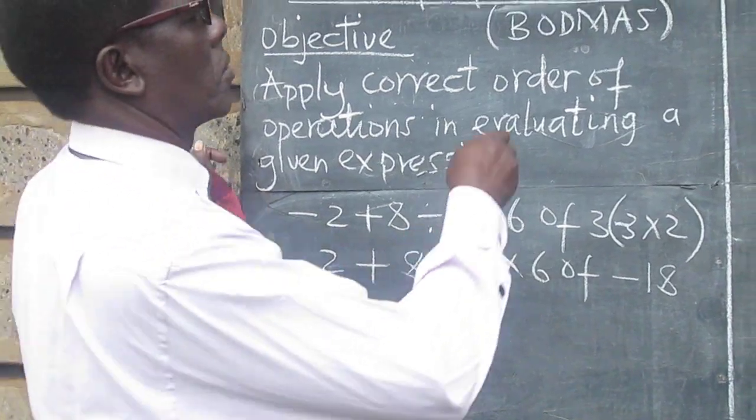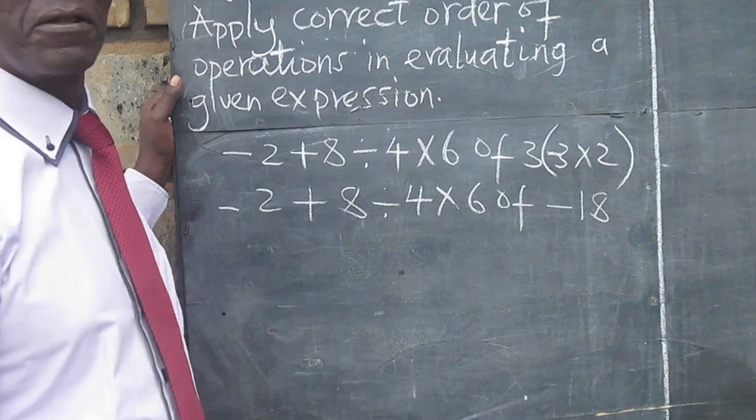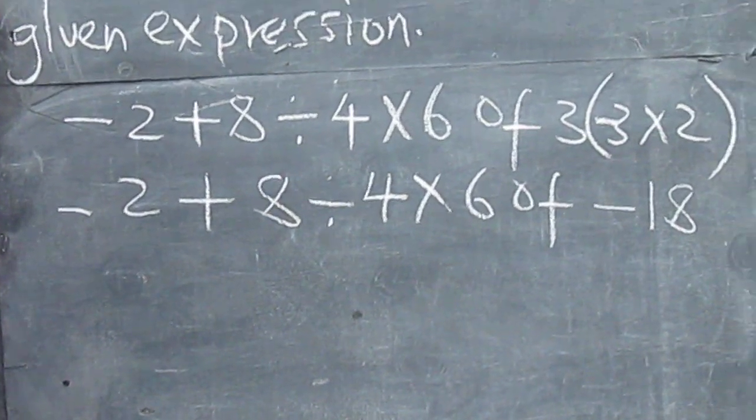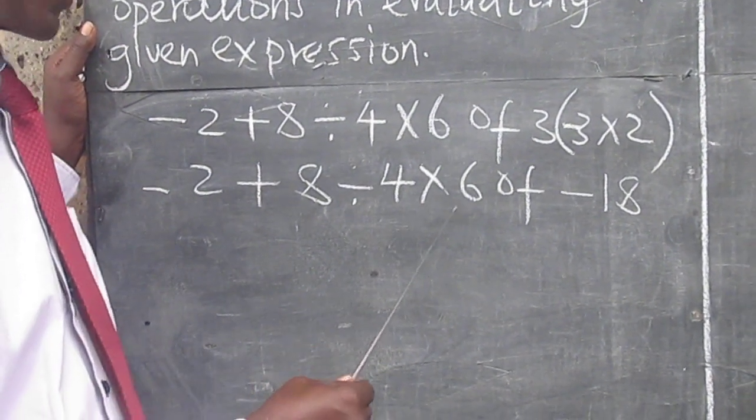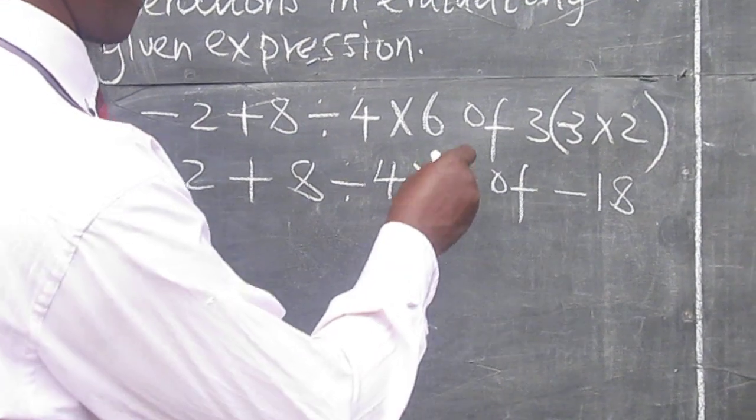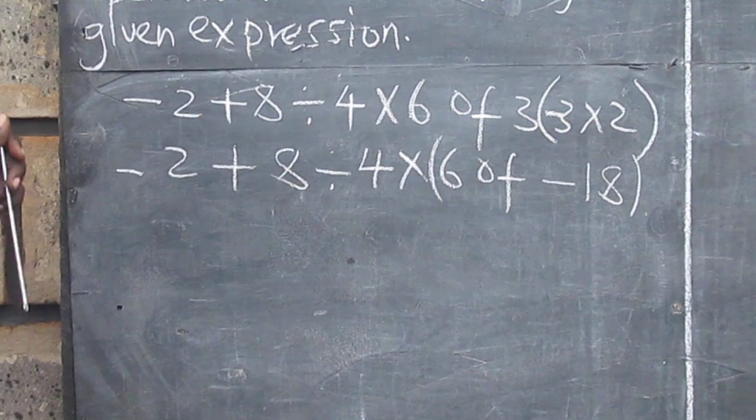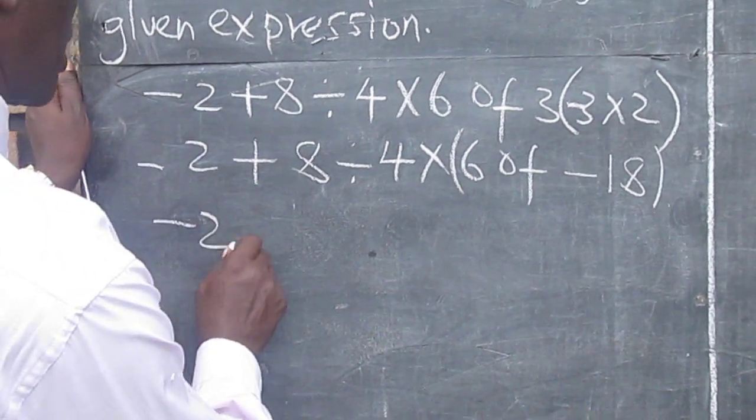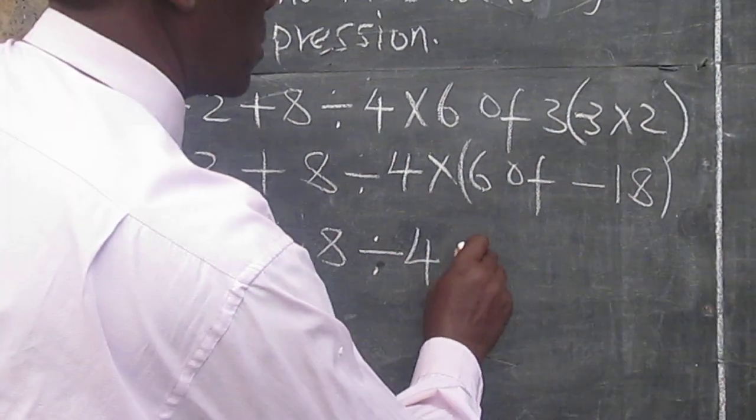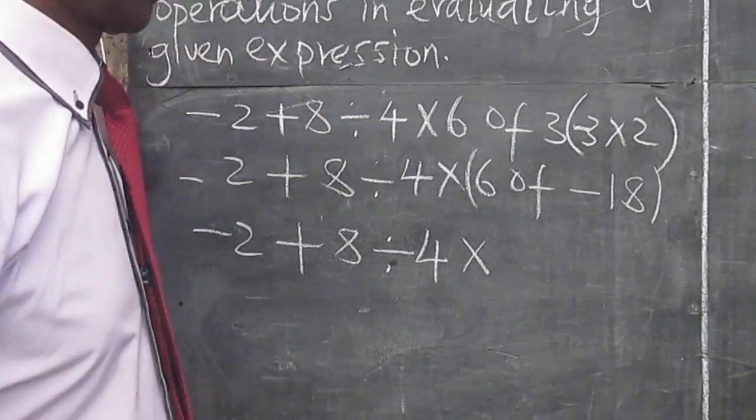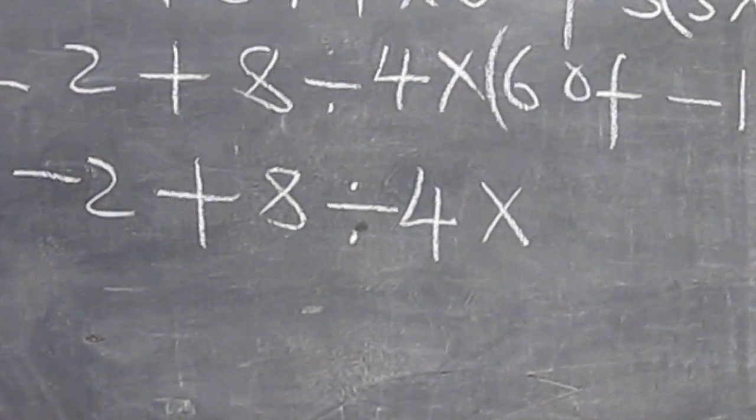So we are drawing the brackets. And now we interpret the 'of' to mean multiplication. And it will mean that we create our own bracket here. So that now the expression becomes -2 + 8 ÷ 4 × 6 of 18. 6 of 18, that would mean 6 × 18.